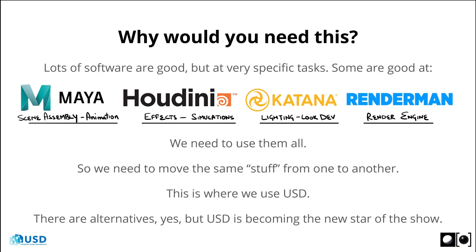Now you'll be wondering, why do we need this now? Because we have been working with 3D for ages. Why suddenly do you need to have a USD pipeline? Well, during the last few years, there have been a lot of softwares which have come out, and they specialize in very specific things — such as Maya for animation, Houdini for effects, Katana for lighting, Render Man for rendering, and there are many more. As a creator, we want to use them all, but transferring files from one to the other always becomes a tedious task, especially when you want to do complicated stuff like having thousands and thousands of buildings in a city scene. And to counter that, we have USD.